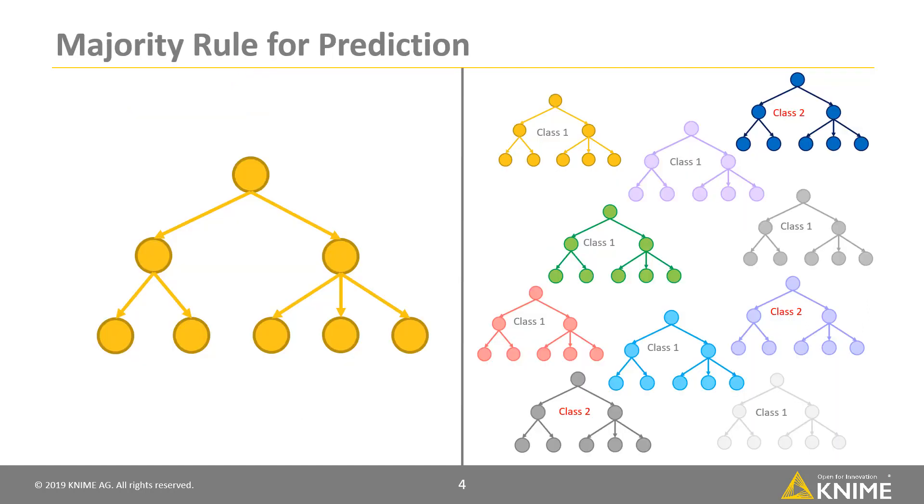The n slightly differently trained trees will produce n slightly different predictions for the same input vector. Usually, the majority rule is applied to make the final decision. The prediction offered by the majority of the n trees is adopted as the final one.